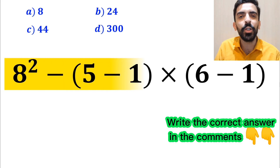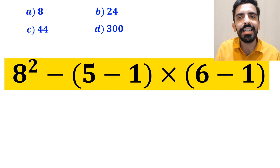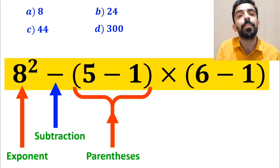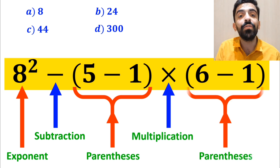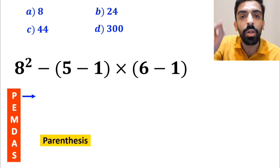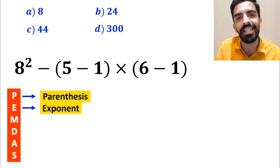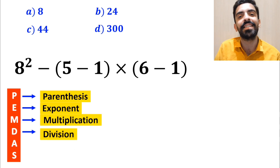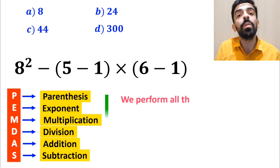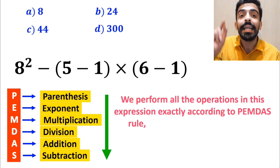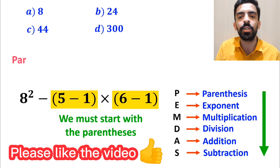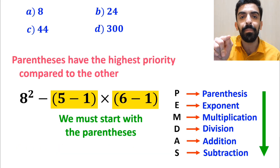Now let's go step by step — I'll show you how to solve this expression properly. As you can see in the image, this expression has an exponent, then a subtraction sign, then parentheses, a multiplication sign, and finally another parenthesis. To solve this question we must strictly follow the PEMDAS rule, performing all operations in order from top to bottom. We must start with the parentheses first, because according to PEMDAS, parentheses have the highest priority.